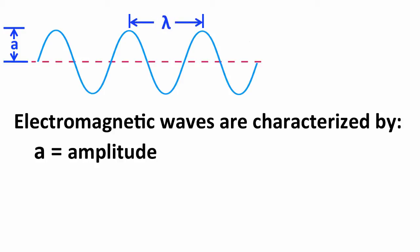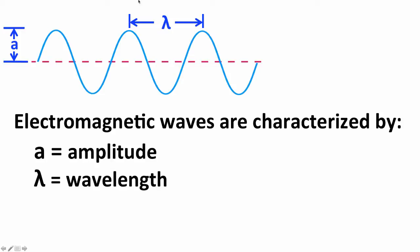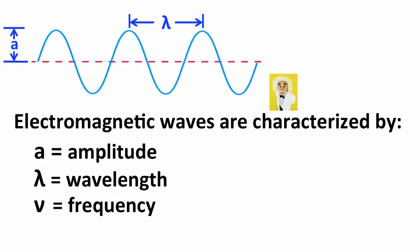They have a length or distance between one peak and the next peak — also the distance between one trough and the next trough, or the same part of any one repetitive oscillation to the same location on the next oscillation. That's called the wavelength, symbolized by the Greek letter lambda. They have a frequency, which is how many oscillations pass by a given location in a certain amount of time, symbolized by the Greek letter nu, which looks kind of like a V.